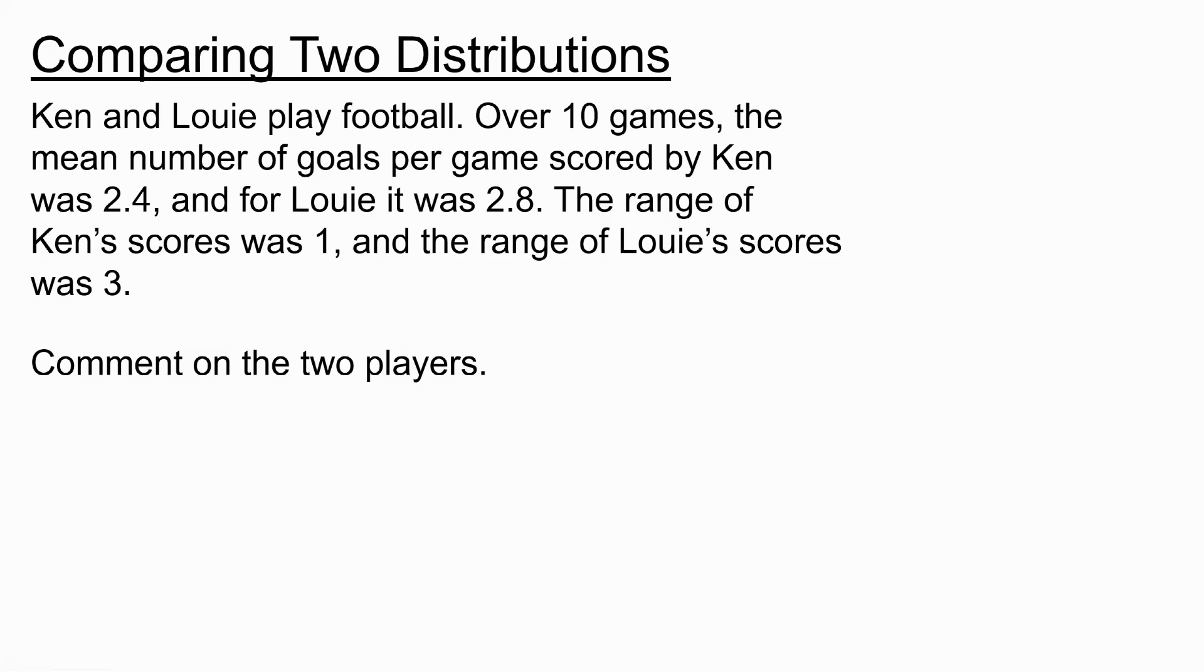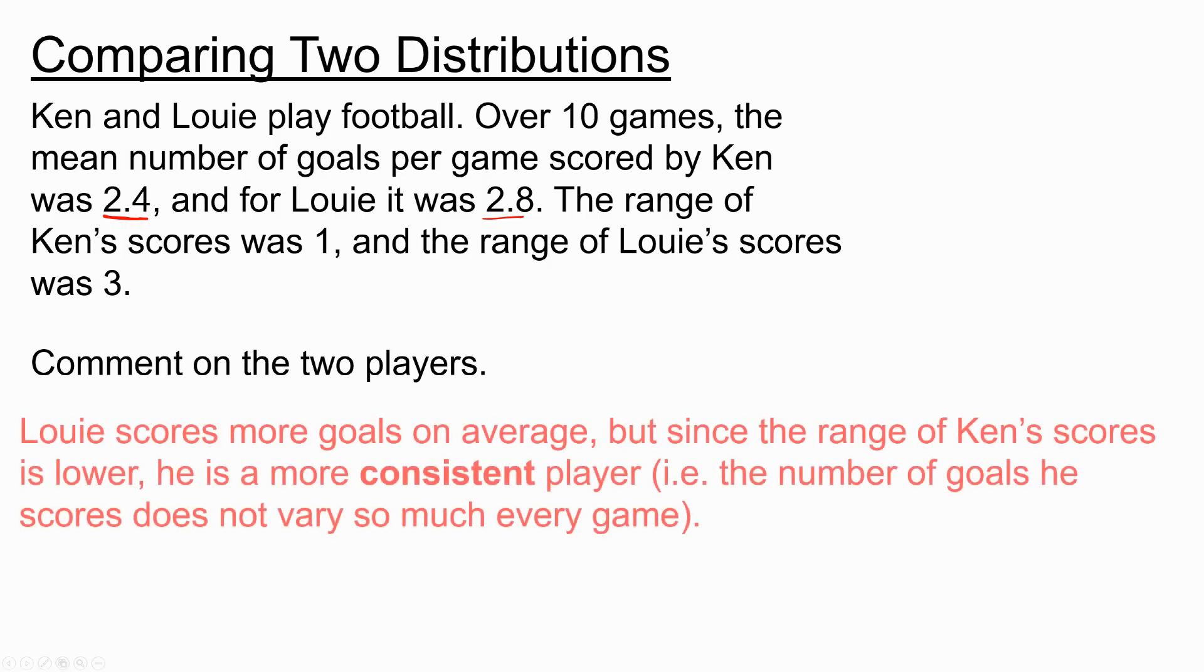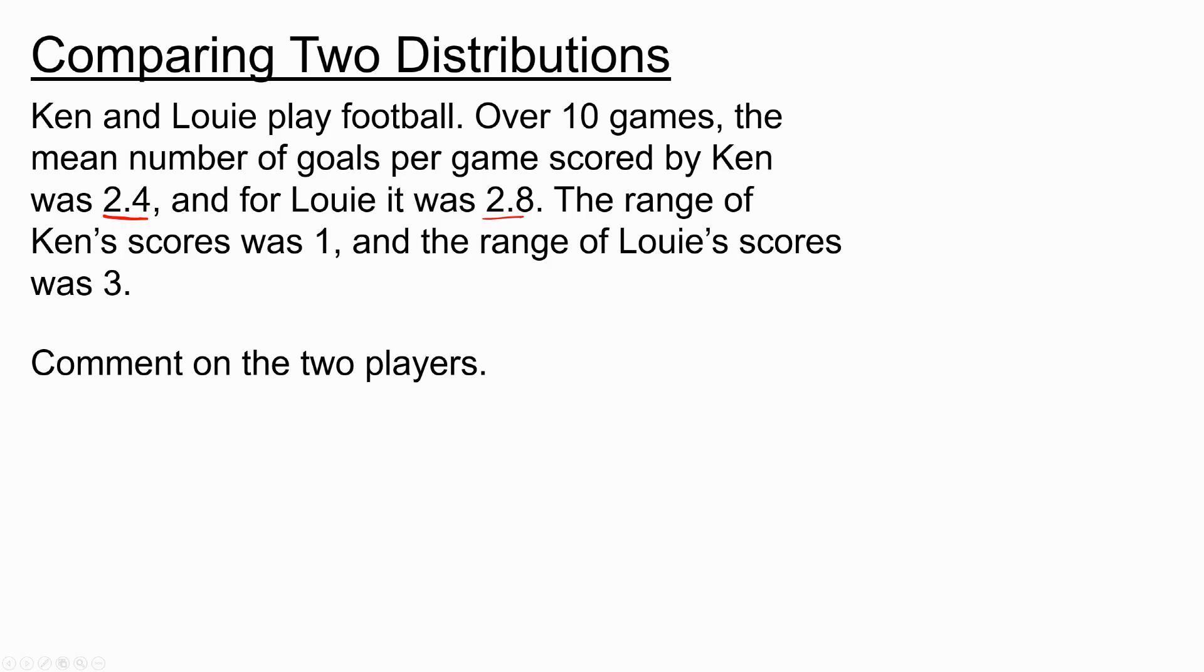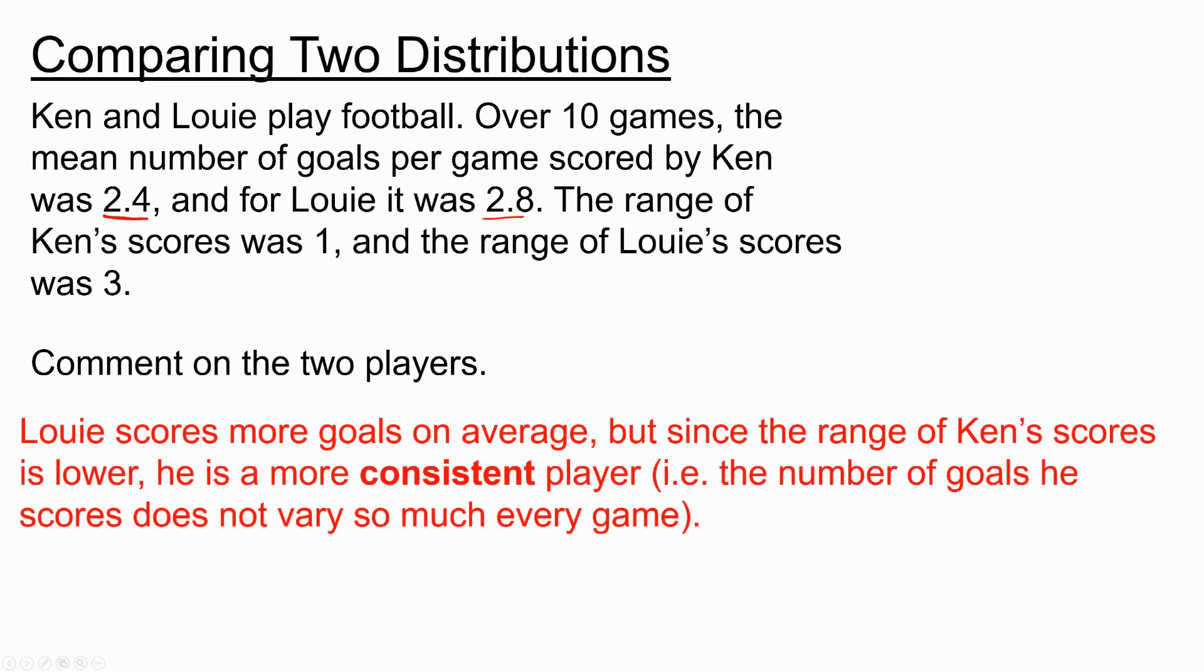We use the averages to compare two distributions. For example, Ken and Louis play football. Over 10 games, the mean number of goals per game scored by Ken was 2.4, and for Louis was 2.8. The range of Ken's scores was 1, and the range of Louis' scores was 3. We're asked to comment on the two players. Because Louis has a higher mean number of scores per game, we say that he scores more goals on average. But since the range of Ken's scores is lower, he is a more consistent player. Because if the range is lower, the data is less spread out.